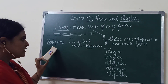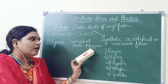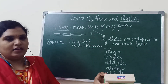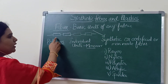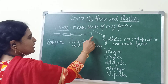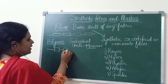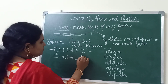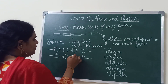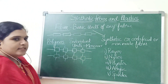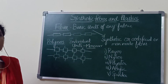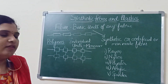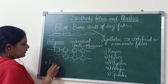Synthetic fibers are polymers derived from individual units called monomers. The arrangement of these monomers may be in a straight chain or in a cross-linked pattern — both arrangements are possible. Generally, synthetic fibers are derived from petrochemicals.